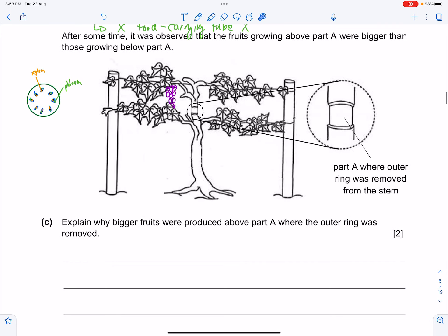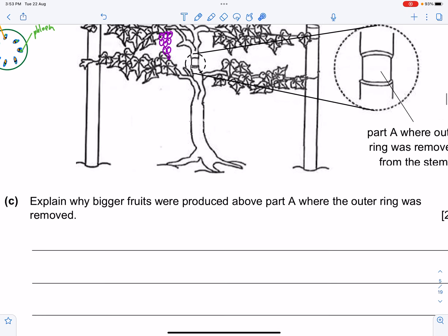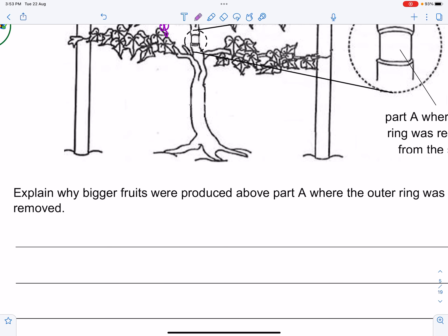So let's see how we can plan it down. First things first, you have to tell me what was being removed. So the fact that a certain part was removed, you need to identify that for me. So you have to tell me that at part A, the food carrying tube was removed.